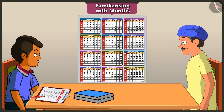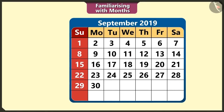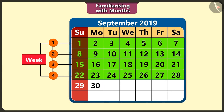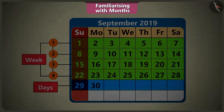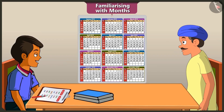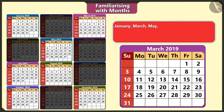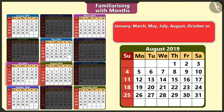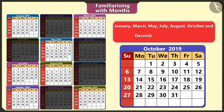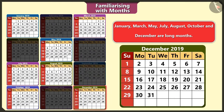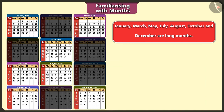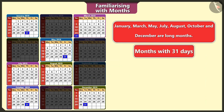Uncle, how many weeks are there in a month? Chotu, there are 4 weeks and a few days in one month. How many days are there in each month? The number of days in each month varies. January, March, May, July, August, October and December are the long months. There are 31 days in these months.